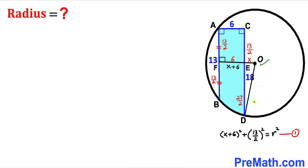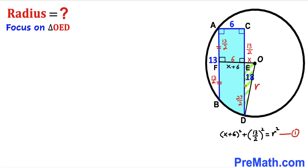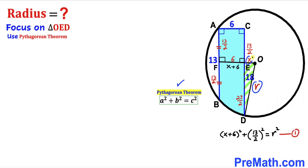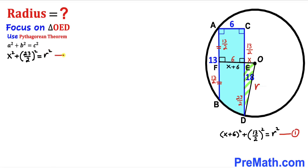Now I connect center O to point D. OD is also a radius of the circle, labeled R, and the angle at E is 90 degrees. Focusing on right triangle OED and applying the Pythagorean theorem, with hypotenuse R, one leg X, and the other leg 23/2: X² + (23/2)² = R². This is equation 2.